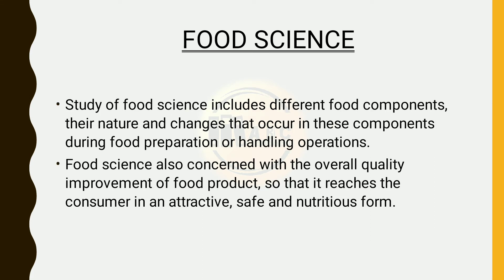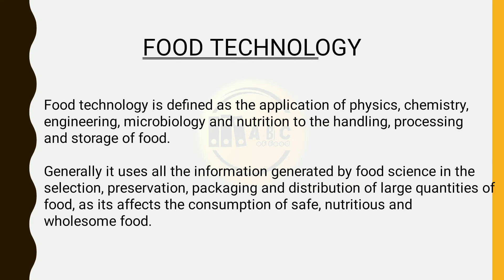So to make it understood, food science emerged as a discipline to provide systematic knowledge of food components, its nature and behavior under various conditions of food preparation or handling operations. Food science is also concerned with the overall quality improvement of food products so that it reaches the consumer in an attractive, safe and nutritious form. But only the basic knowledge of food components is not sufficient to convert food into different food products — one must know how to apply this knowledge.